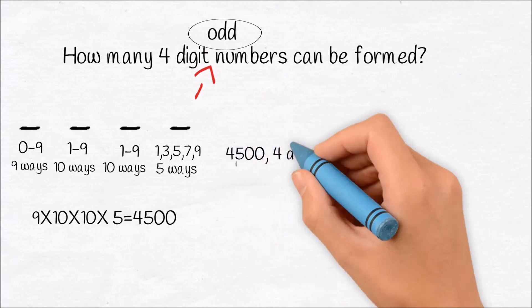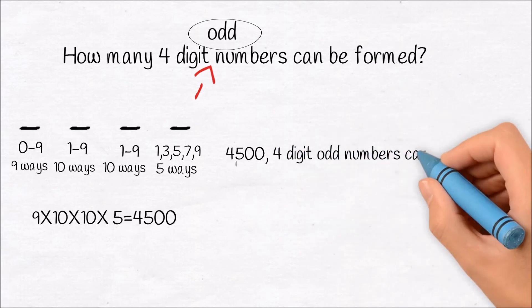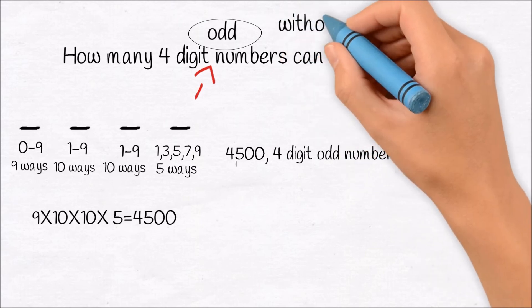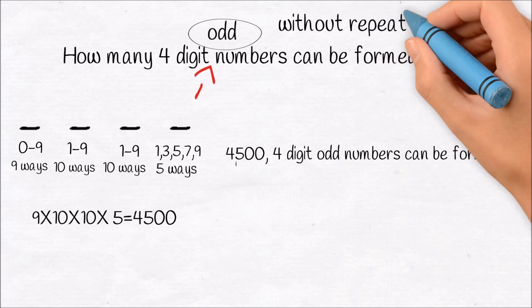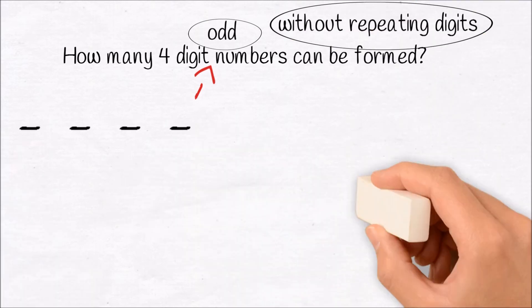You may say even this problem could have been solved without applying any formula. Okay, let me add one more tweak in the problem. How many 4-digit odd numbers can be formed where digits are not repeated? Can you solve this problem without using FPC? It is difficult. Let me solve.